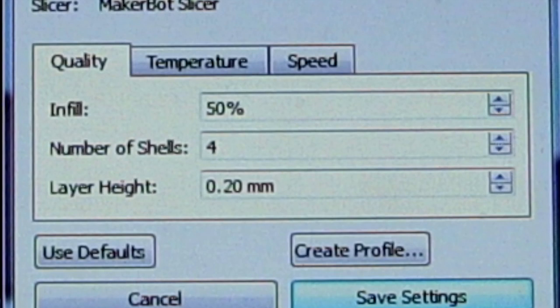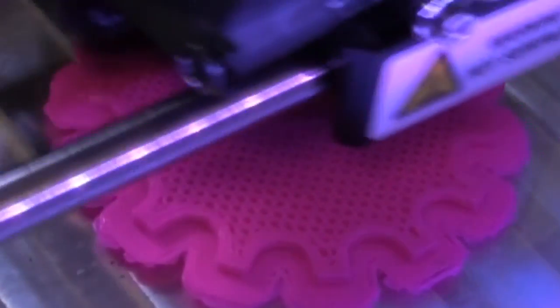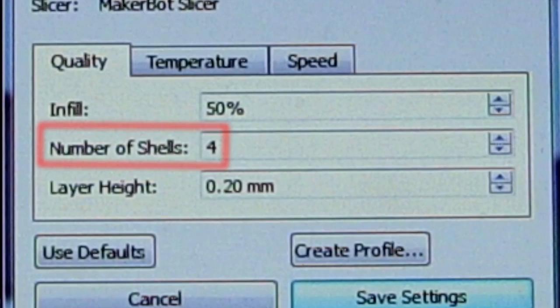But even more important, I think, was this number of shells. That's this outline of material it puts here. As you can see, that just happens to fill in the teeth of the sprocket, making them strong. Four shells seem to work well.